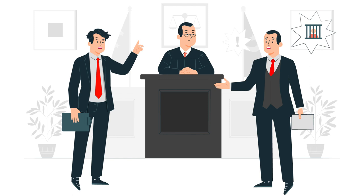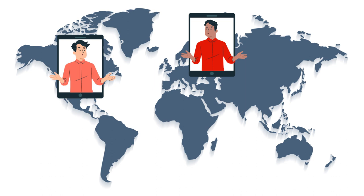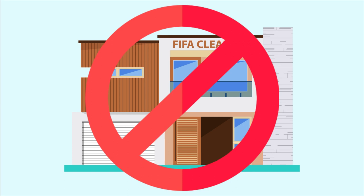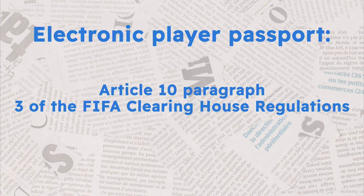Employment-related disputes between a club and a player of an international dimension — this includes all contractual disputes where the player's nationality is different from the country where the club is based. Disputes relating to training compensation and the solidarity mechanism between clubs belonging to different associations that are not governed by the FIFA clearinghouse regulations. Matters of legal or factual complexity in an electronic player passport review process in accordance with article 10, paragraph 3 of the FIFA clearinghouse regulations, and disputes between clubs in accordance with article 18, paragraph 2 of the FIFA clearinghouse regulations.